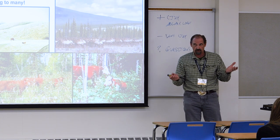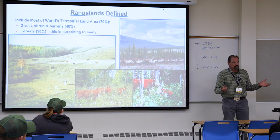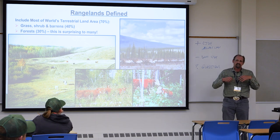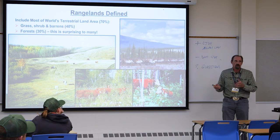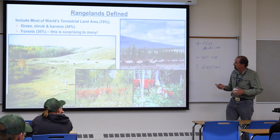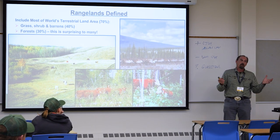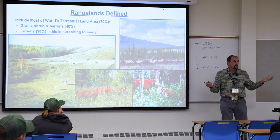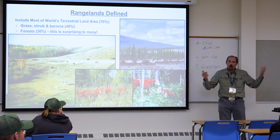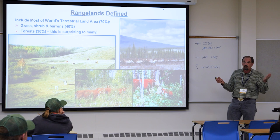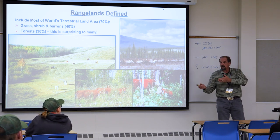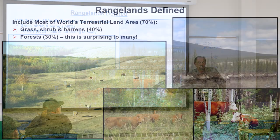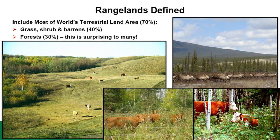When I realized that the majority of the planet actually falls into this category of rangelands, I got excited. Most people think of open grasslands, but it also includes steppe lands — shrub-dominated areas that are huge parts of Africa, Australia, Siberia, and even Western Canada. It includes barrens like the high Arctic tundra, grazed by musk ox and reindeer. And boreal forest, where we have moose, woodland caribou, elk, and also cattle grazing. Collectively, about 70% of the planet's terrestrial lands fall into the category of rangeland.